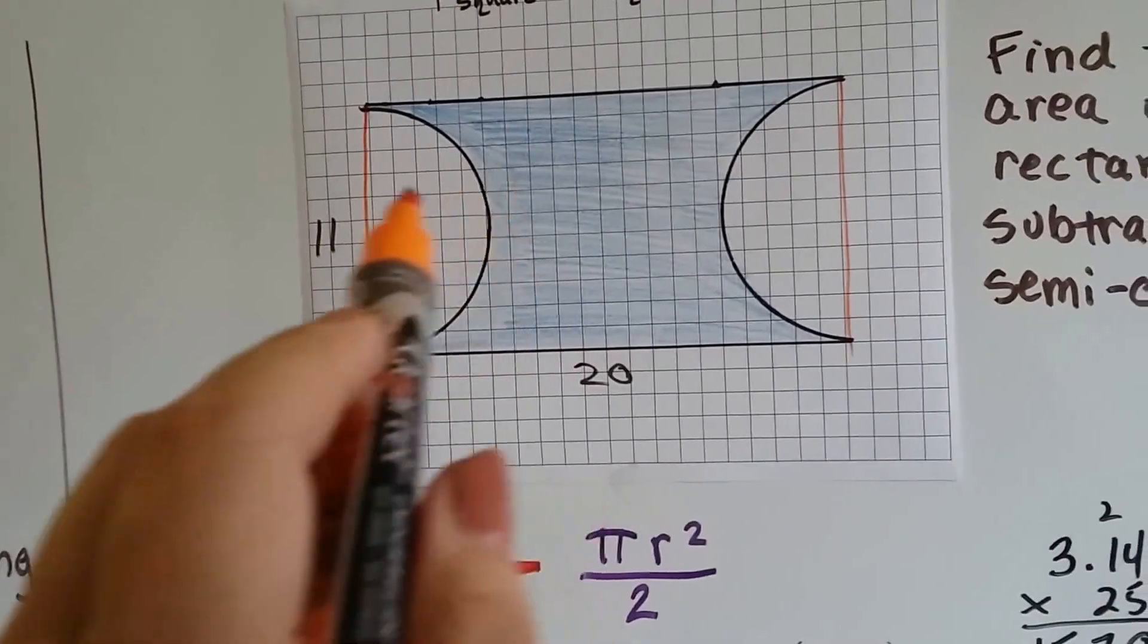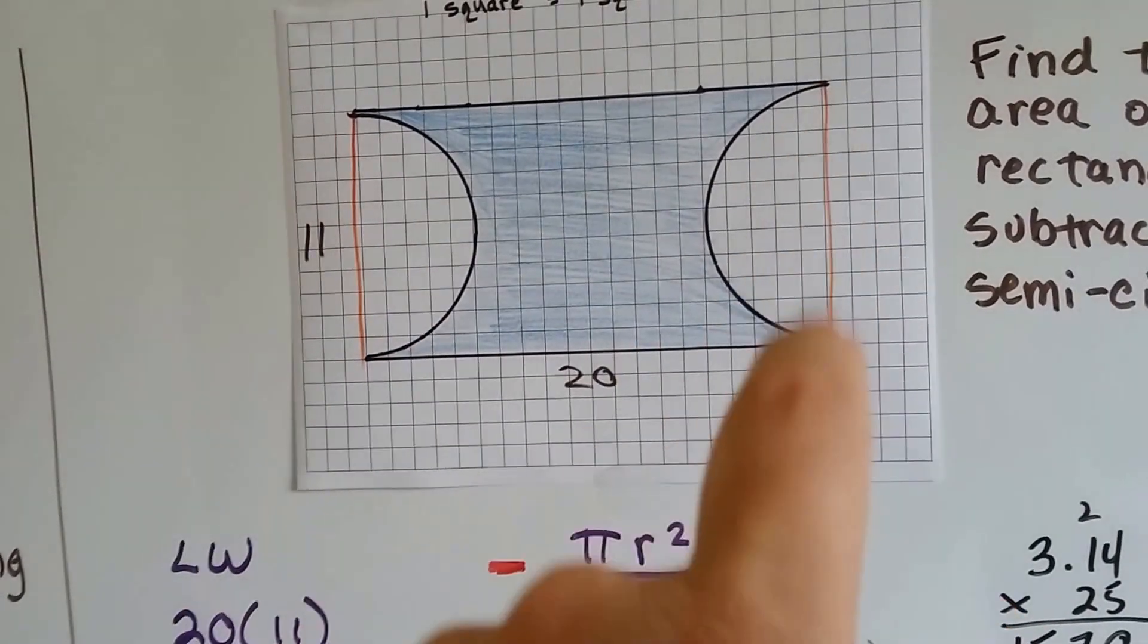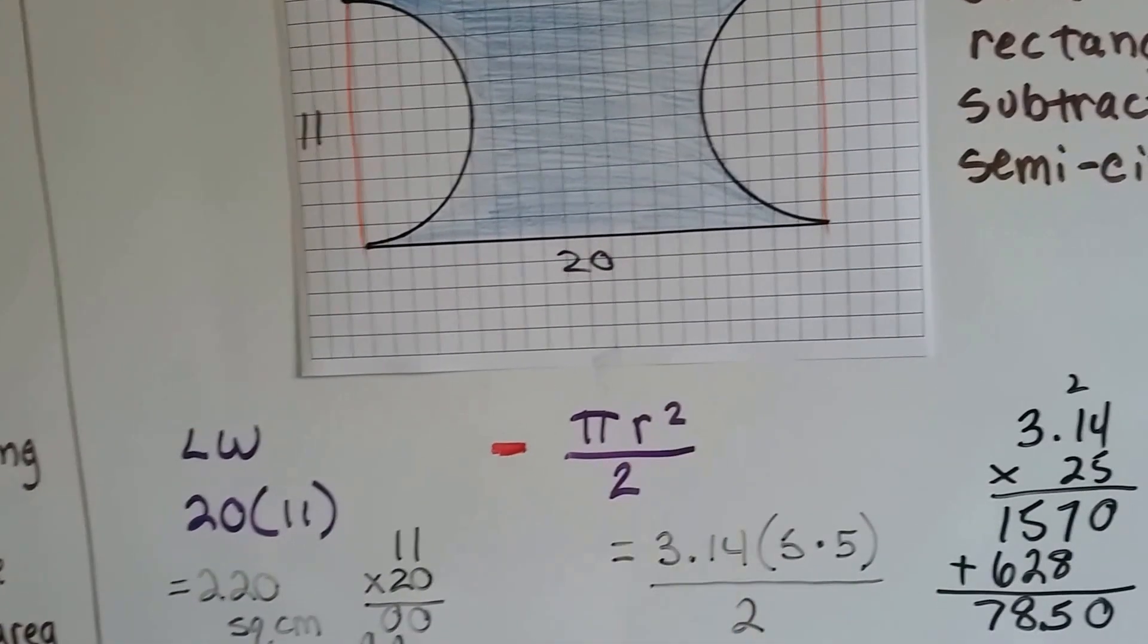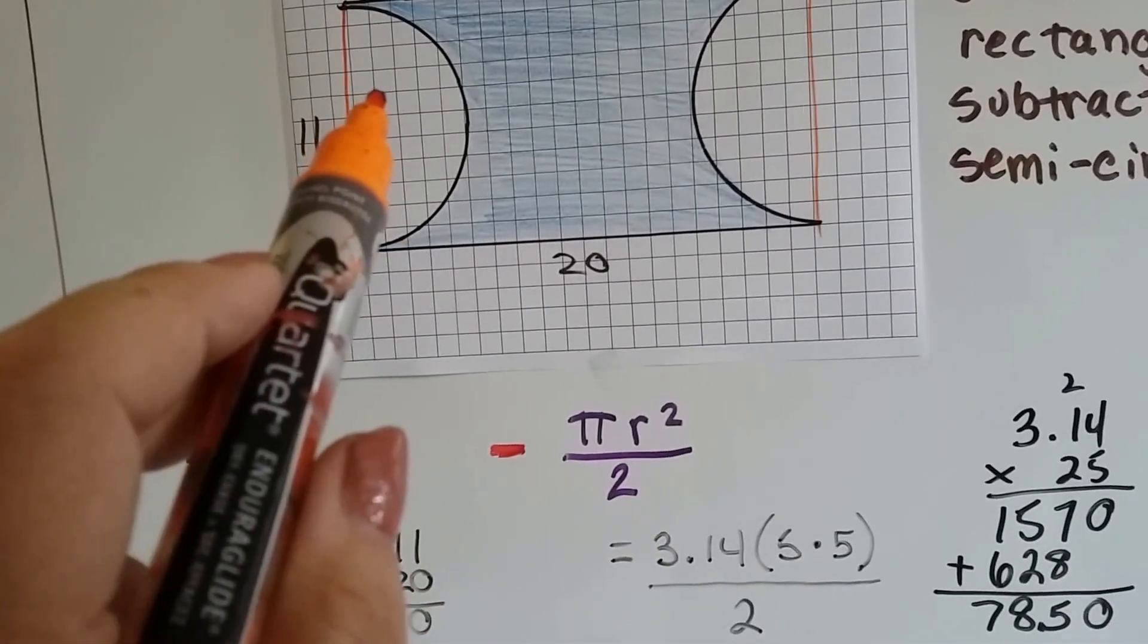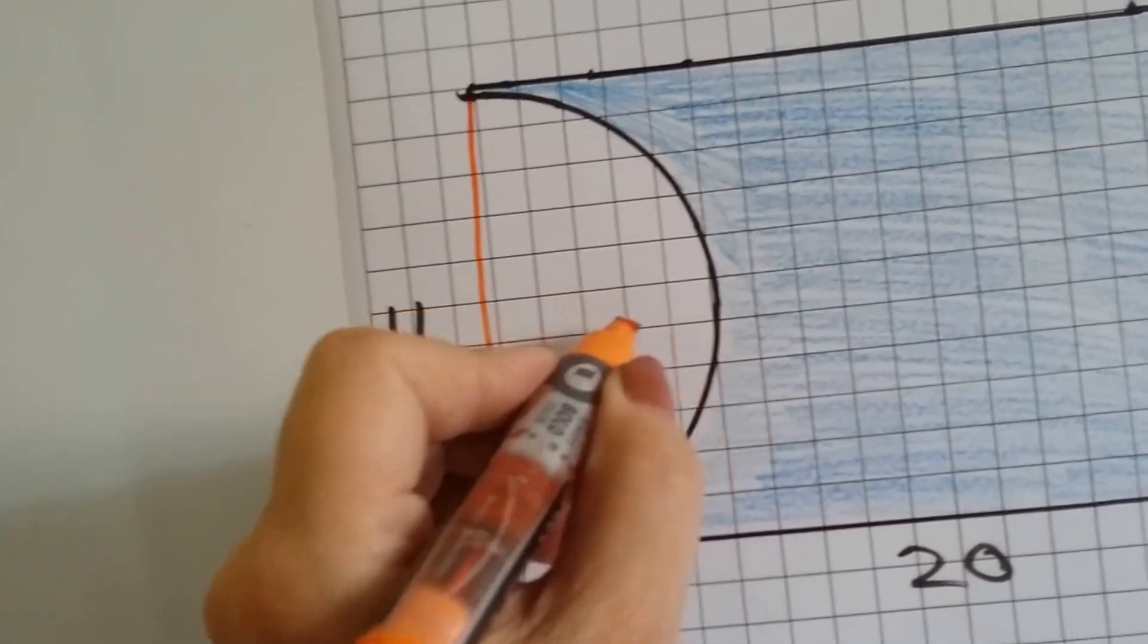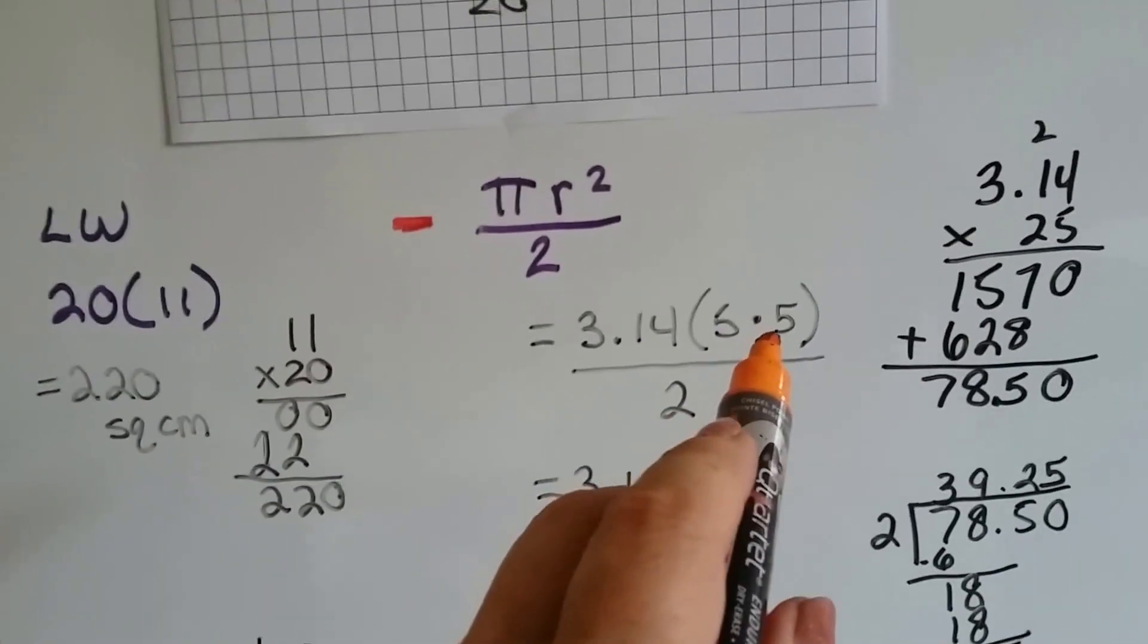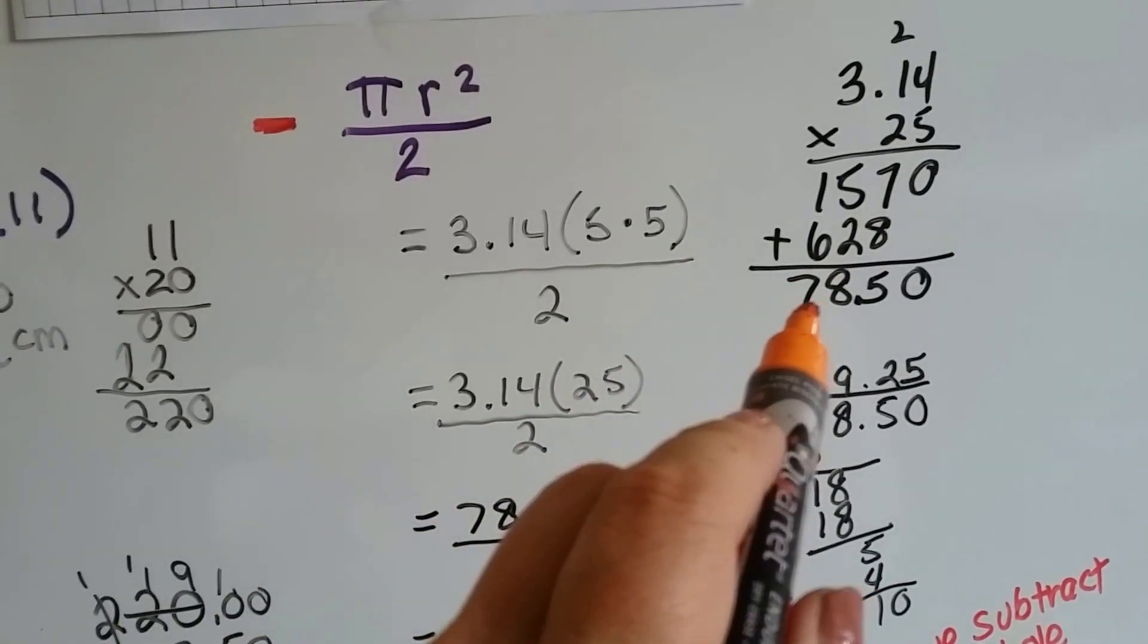Now what we need to do is find the area for a circle and it's cut in half. The area of a circle would be pi r squared divided by 2 for a semicircle. If we did just one of these, we would do 3.14 times its radius and its radius is 5. So we need 5 times 5, that's 25, and 3.14 times 25 is 78.50.